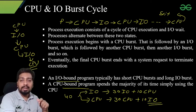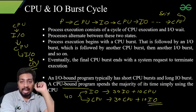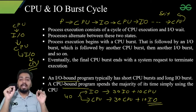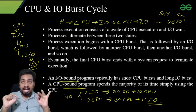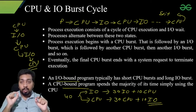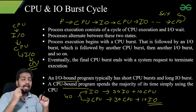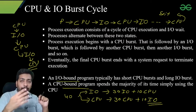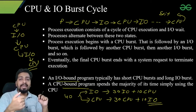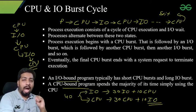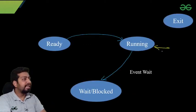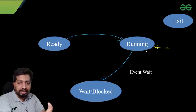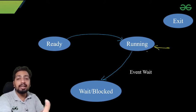In CPU scheduling algorithms, we always assume we are only considering CPU burst — we are not considering IO burst — unless it is explicitly mentioned. In the last 20 years of GATE exams, there are only 4 or 5 questions where they explicitly mention to consider IO burst; otherwise, all questions ask you to consider only CPU burst. In the diagram, a CPU bound program spends most of its time in the running state, utilizing the CPU.